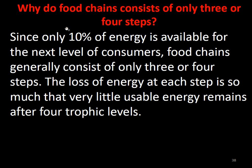Why does a food chain consist of only 3 or 4 steps? Since only 10% of energy is available at each trophic level for the next level, food chains generally consist of only 3 or 4 steps. The loss of energy at each step is so great that very little usable energy remains at the fourth level.